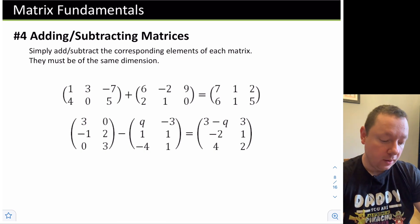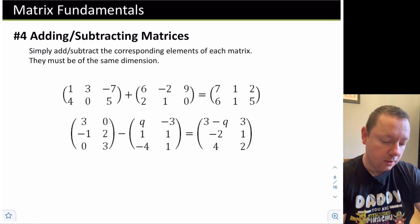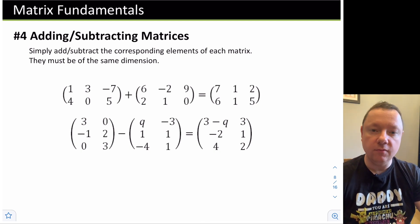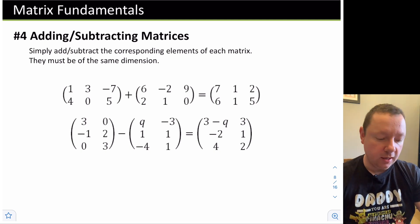Similarly, for taking away, these two matrices taken away from each other: 3 take away 0, that's the first element. 0 take away -3 is just positive 3. -1 take away -1 is -2. 2 take away 1 is 1. 0 take away -4 is positive 4. And 3 take away 1 is 2. Obviously, it should be clear, but to add or subtract matrices, they have to have the same dimensions. You cannot add a 2 by 3 and a 1 by 3 matrix together because it doesn't make any sense.